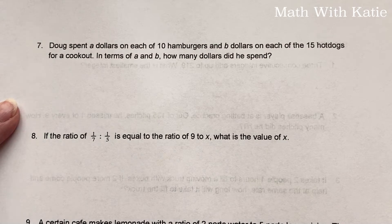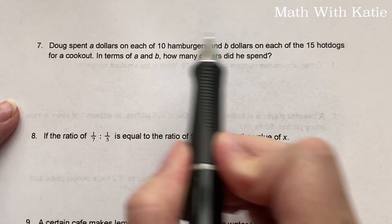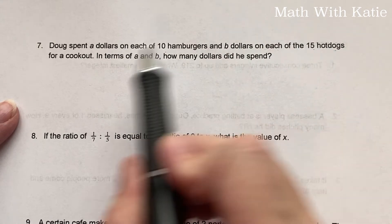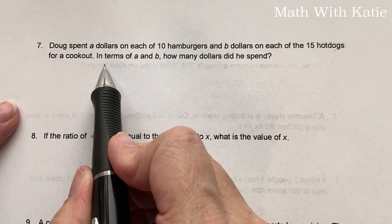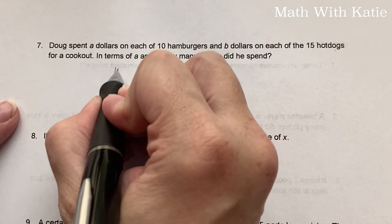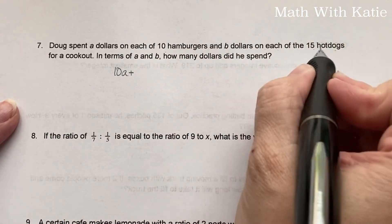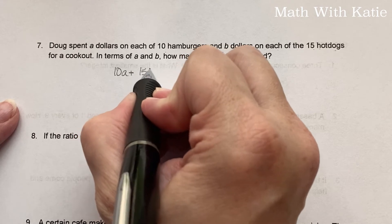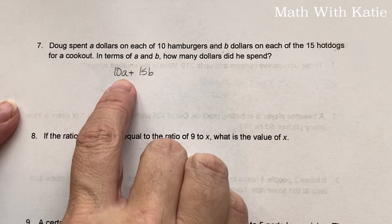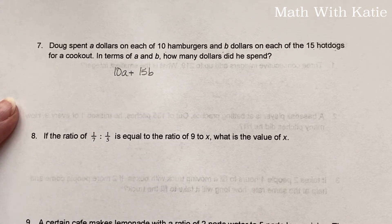Doug spent A dollars on each of the 10 hamburgers and B dollars on each of the 15 hot dogs for a cookout. In terms of A and B, how many dollars did he spend? Well, it's 10 times A plus 15 times B. That's it. So you have your rate times your individual.